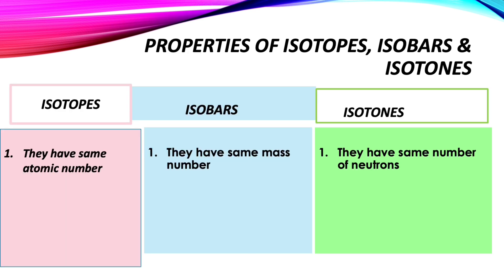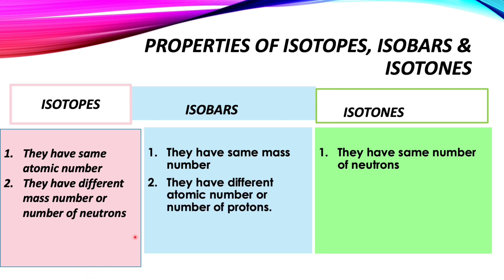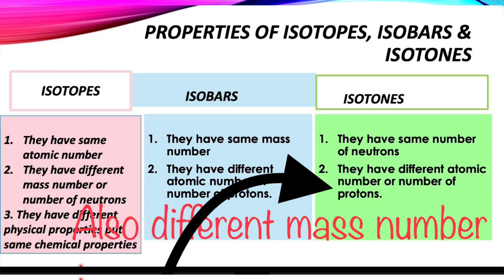To differentiate them: isotopes have the same atomic number; isobars have the same mass number; isotones have the same number of neutrons. Isotopes have different mass number and different neutrons; isobars have different atomic number or number of protons; isotones also have different atomic number or number of protons.